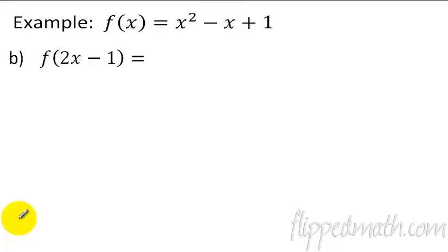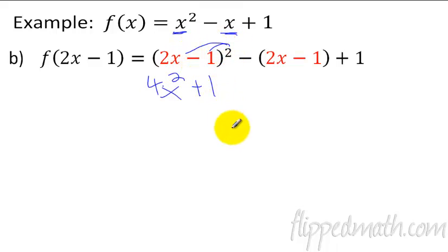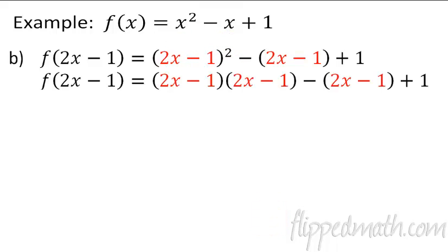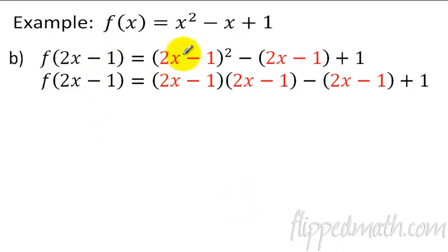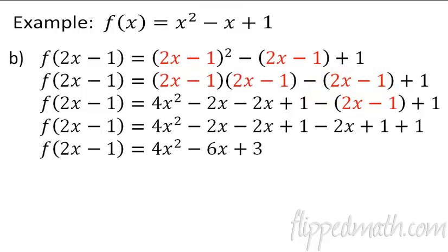Now let's take f of 2x minus 1. This means we plug 2x minus 1 into each spot that had an x. So now it's (2x minus 1) quantity squared minus (2x minus 1). Here's where kids make mistakes — some will think this is 4x squared minus 1. No. A squared means there are two of those (2x minus 1)s, so write it out twice. Then multiply and distribute everything out, distribute the negative, and combine like terms.